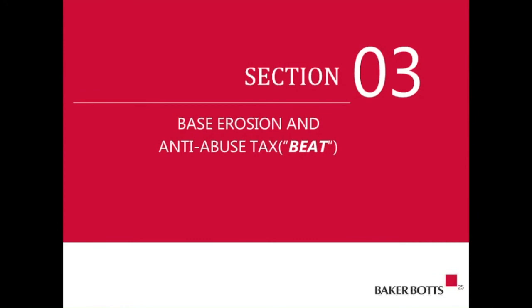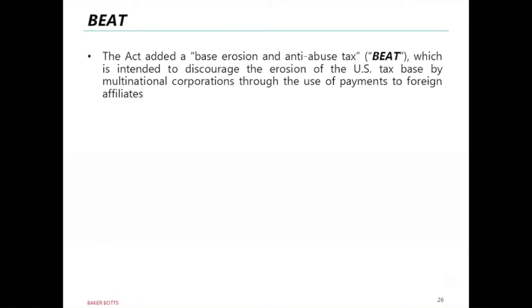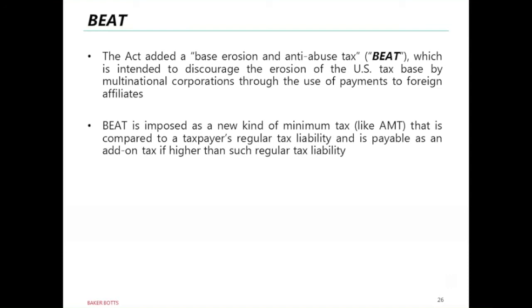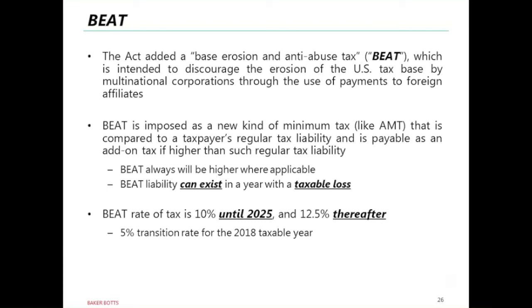Now we turn to BEAT — the Base Erosion and Anti-Abuse Tax. In short, BEAT acts as a sword that seeks to discourage erosion of the U.S. tax base through the use of tax deductions for payments to foreign affiliates. BEAT acts basically as a minimum tax equivalent to AMT, where the only preferences or add-backs are certain deductible payments made to foreign affiliates. BEAT can trigger a tax liability even for a taxpayer that otherwise has a regular tax loss for the year. The rate is generally 10%, with a 5% transition rate for 2018, scheduled to increase to 12.5% after 2025.